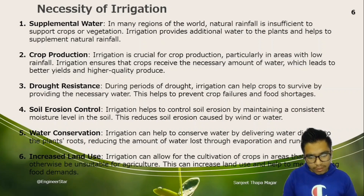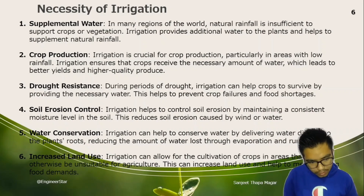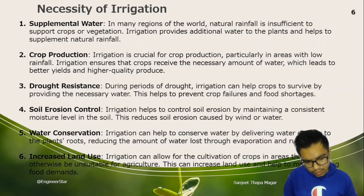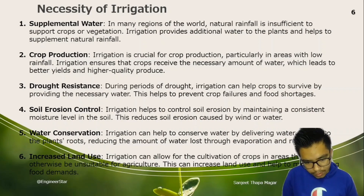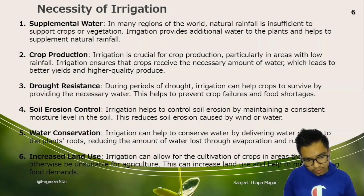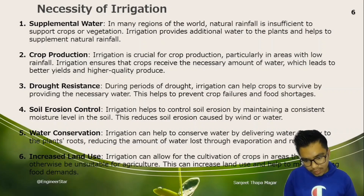Increased land use is another benefit of irrigation. Irrigation can allow for the cultivation of crops in areas that would otherwise be unusable for agriculture. This can increase land use and help meet growing food demands.